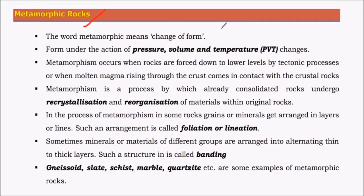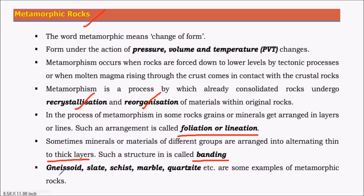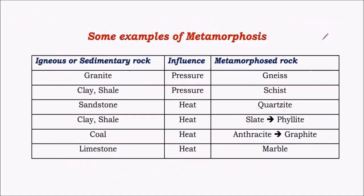Metamorphic rocks are mainly formed from igneous and sedimentary rocks when subjected to huge amounts of temperature and pressure. Metamorphism is simply a change in form — the change is both physical and chemical in nature. During metamorphosis, recrystallization and reorganization of materials of the original rock occur. The most important property is foliation or lineation — in metamorphism, grains or minerals get arranged in layers. In sedimentary rocks this is called stratification, but in metamorphic rocks it is called foliation or lineation. There is also banding, where alternating thin and thick layers of rock accumulate.